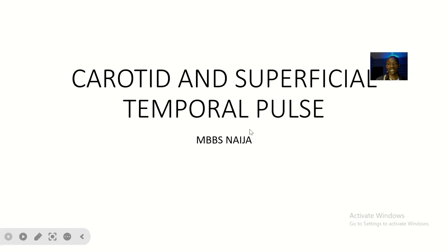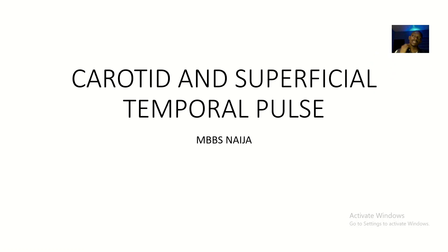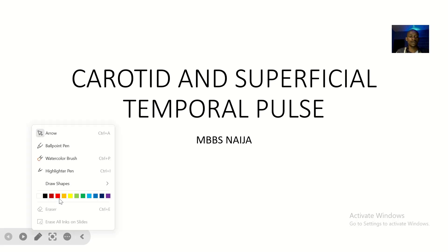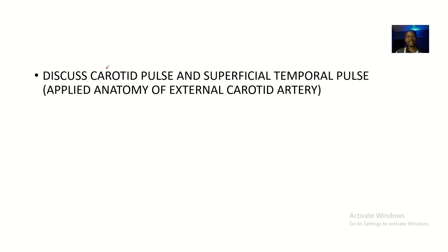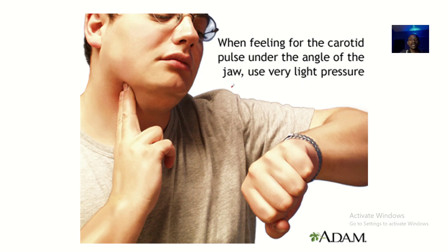There are actually two types of pulses you can take in the neck and the head. Beside the neck is the carotid pulse, and in the head is the superficial temporal pulse, which is taken from the superficial temporal artery. In this lecture we'll be talking about these two types of pulse and defining them. Both are applied anatomy of the external carotid artery.